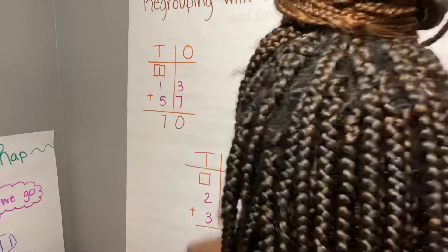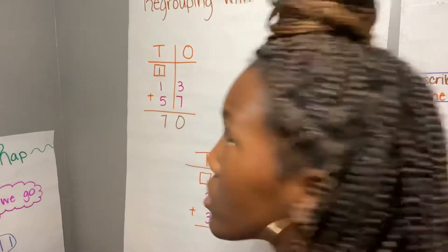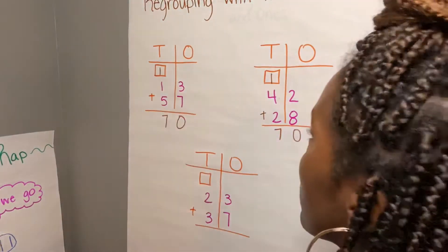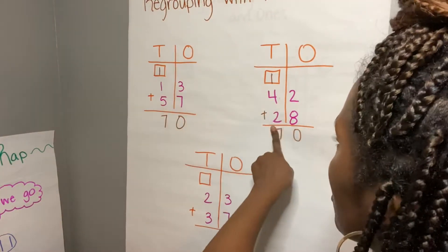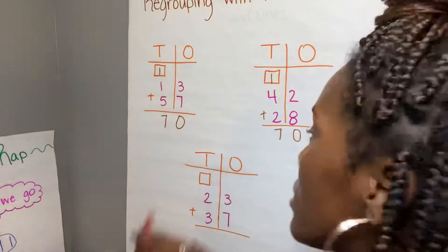Just like over there. So we learned today that 13 plus 57 and 42 plus 28 both equal 70.